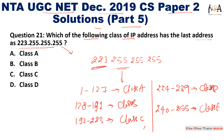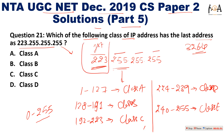An IP address consists of 32 bits divided into four octets — first, second, third, and fourth. The first octet tells us the class. We match 223, which falls in the range 192 to 223, so it is a Class C IP address. Option C is the correct answer.